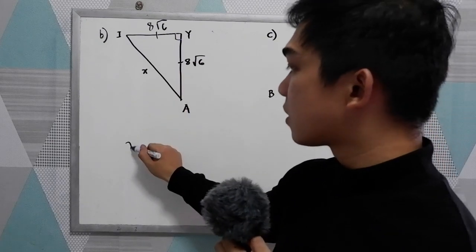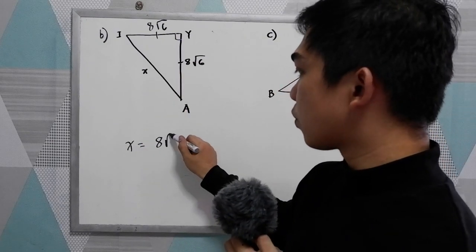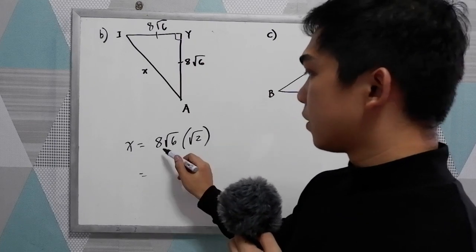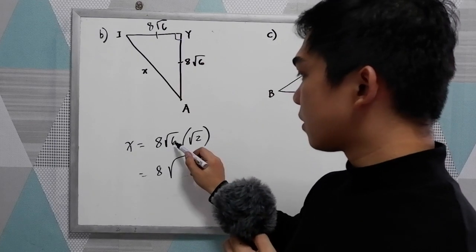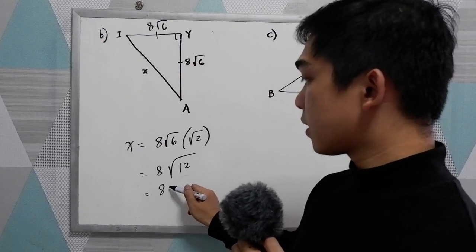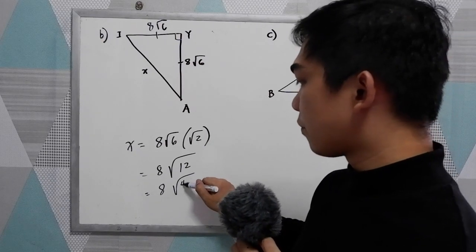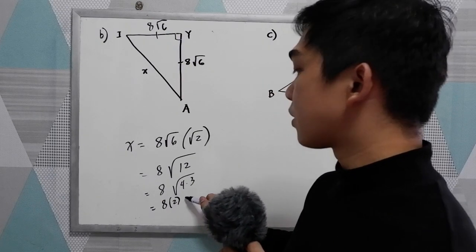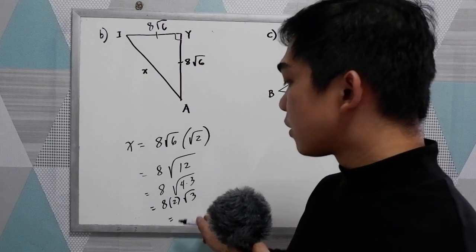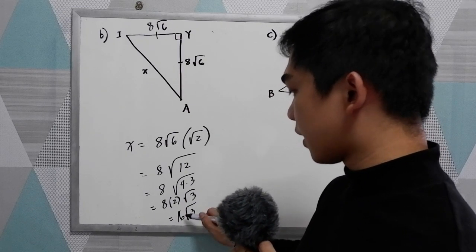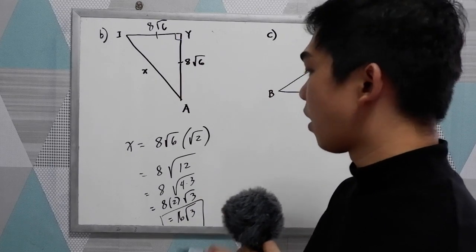To get X, we calculate 8√6 times √2. We have 8 times √(6×2) equals 8√12. Since 12 equals 4×3, we get 8√4√3, which is 8×2√3. So X equals 16√3.